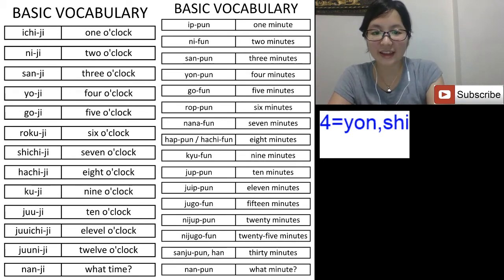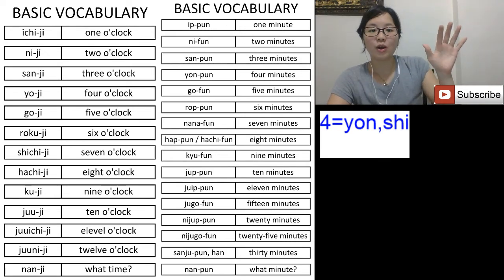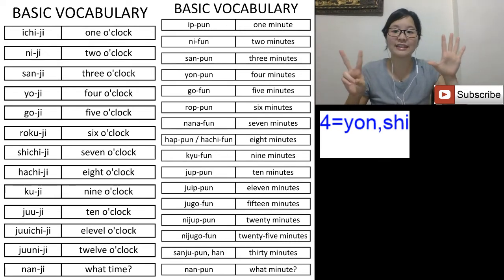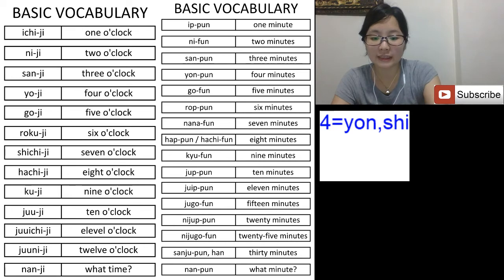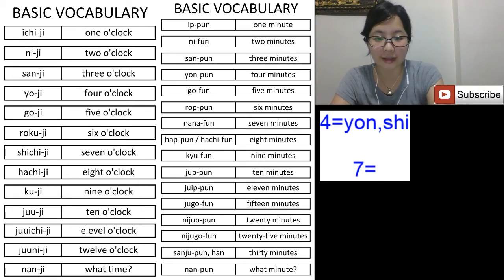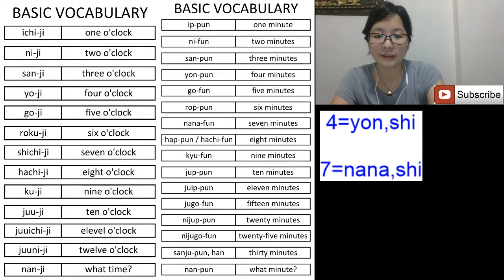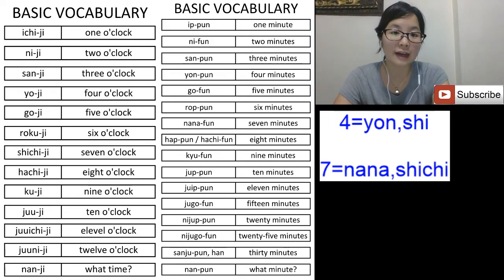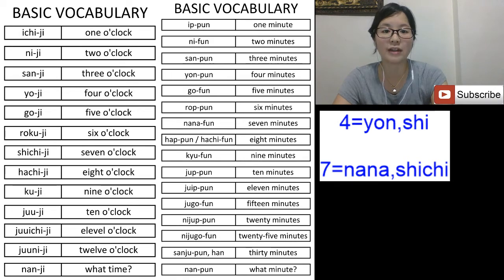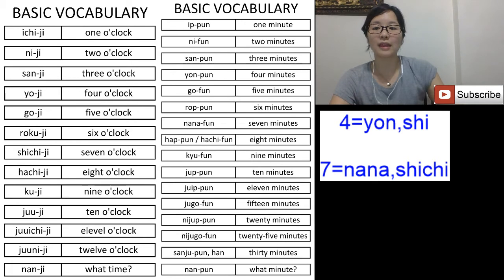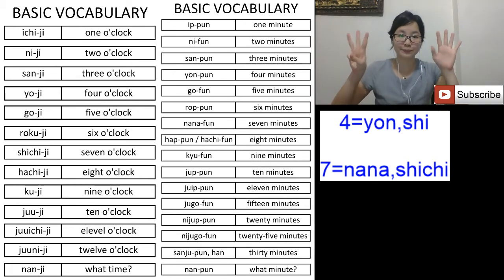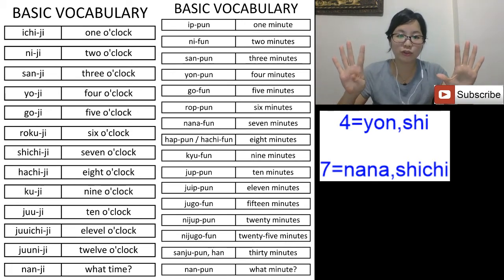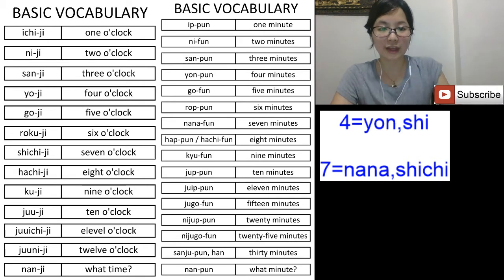As I told you, 'yon' is the Japanese way of reading and 'shi' is the Chinese way of reading. Then go is five, roku is six, shichi is seven. Shichi also has two different types of reading: 'nana' or 'shichi'. Nana is the Japanese way of reading, shichi is the Chinese way. Then hachi is eight, kyuu is nine, juu is ten. So only four and seven have two different kinds of reading.